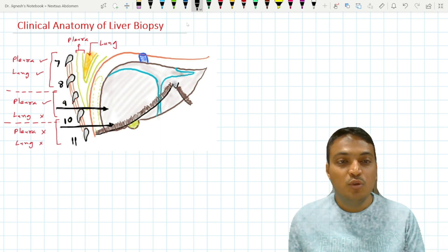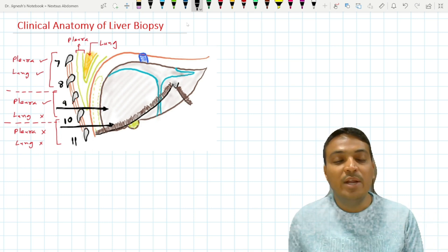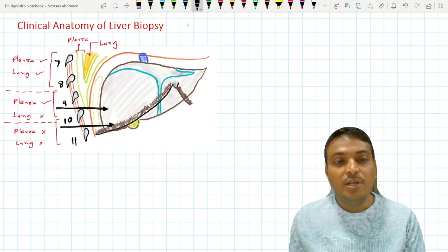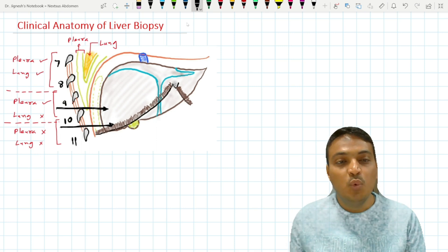That is the skin, superficial fascia, then external oblique muscle. Then just deep to it, we have intercostal muscles. Just deep to it, we will find the two layers of the pleura. In between the two layers of the pleura, we have the costodiaphragmatic recess.